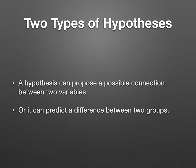According to the book, there are two types of hypotheses — they're really the same. I'll explain how they differ based on the book. The book says a hypothesis can propose a possible connection between two variables, or it could predict the difference in groups. They overlap, and I'll explain why.